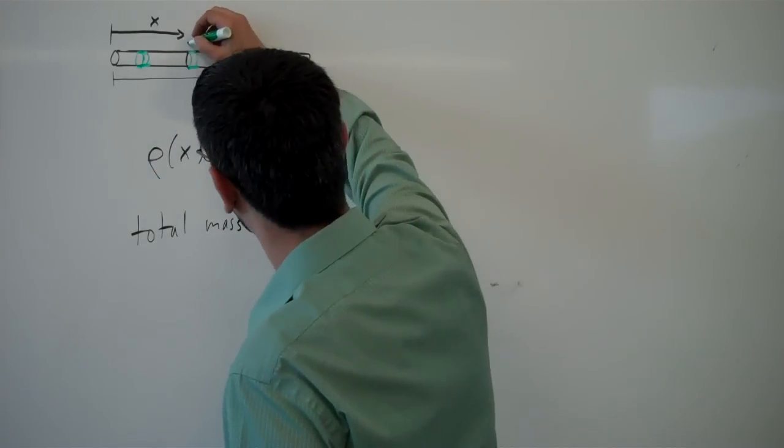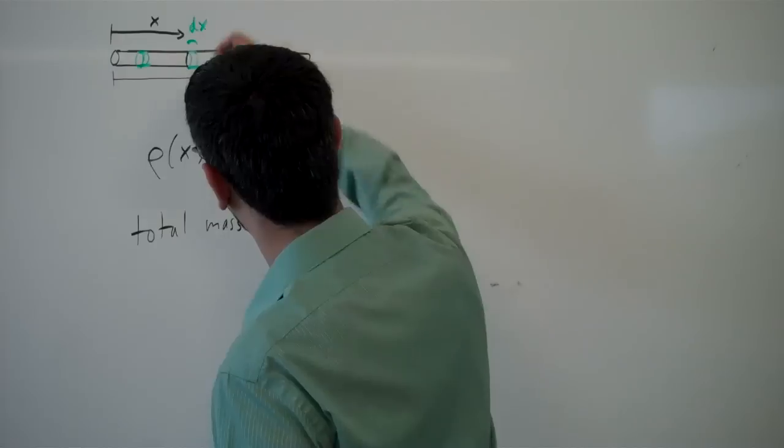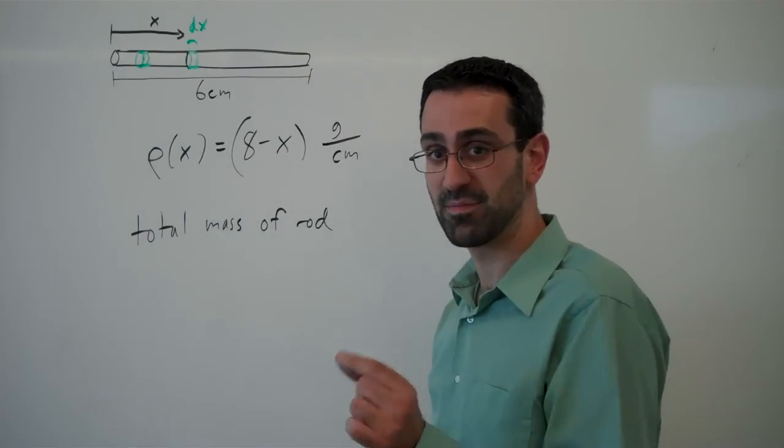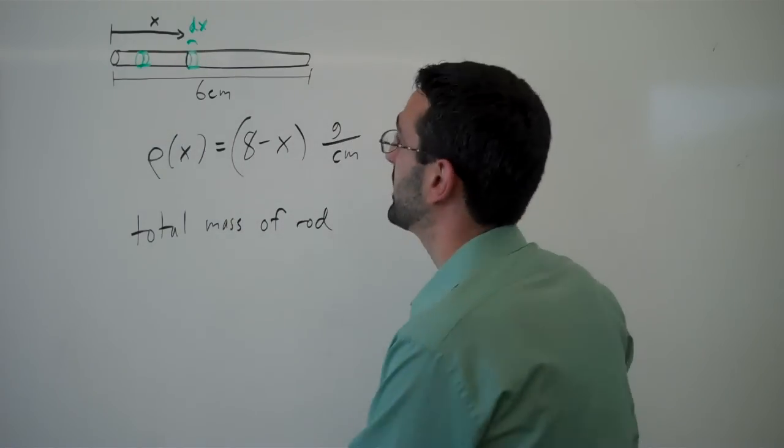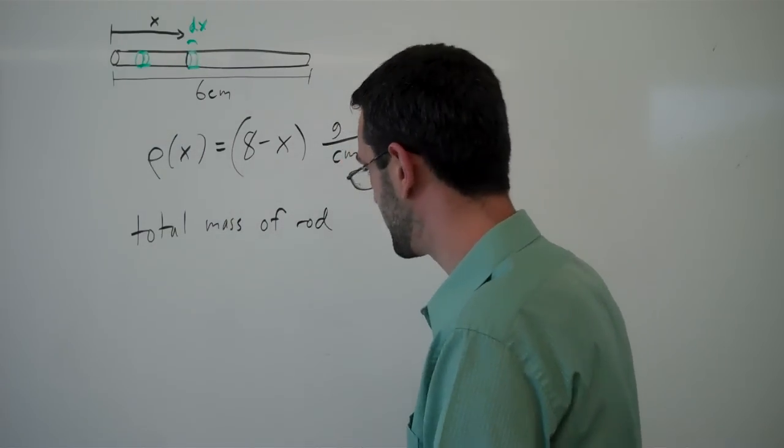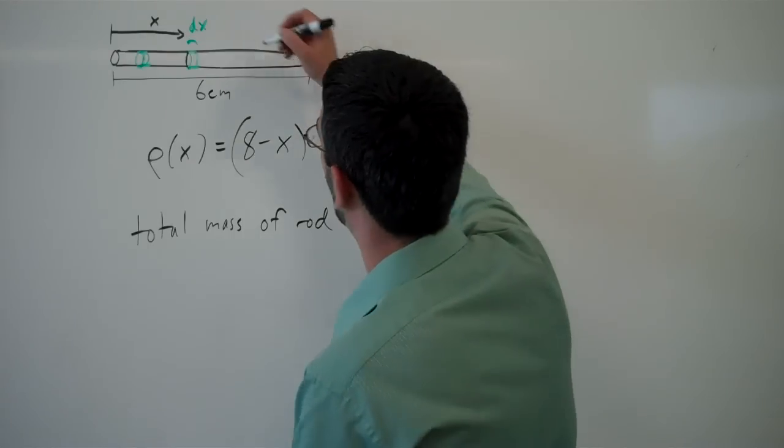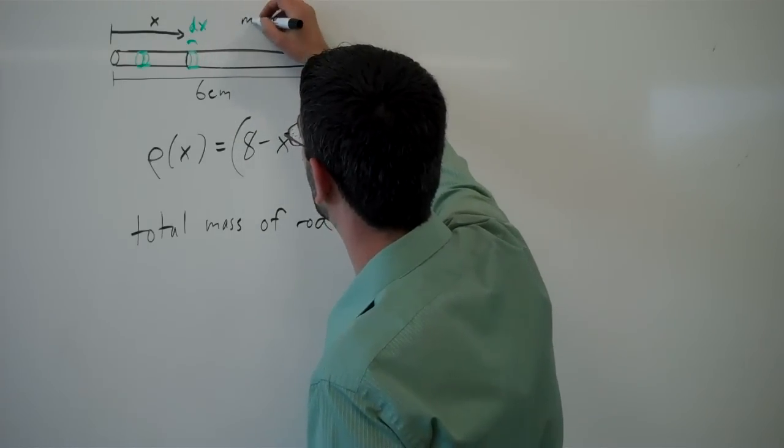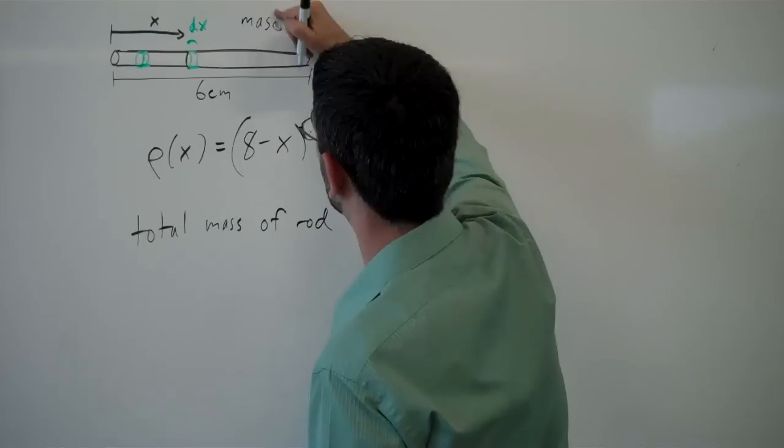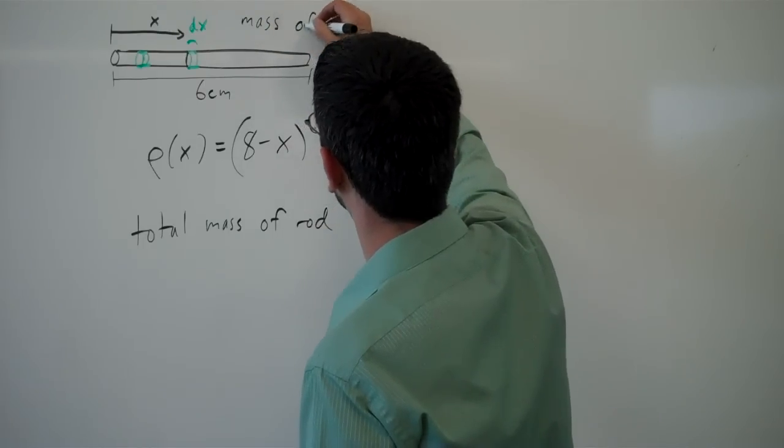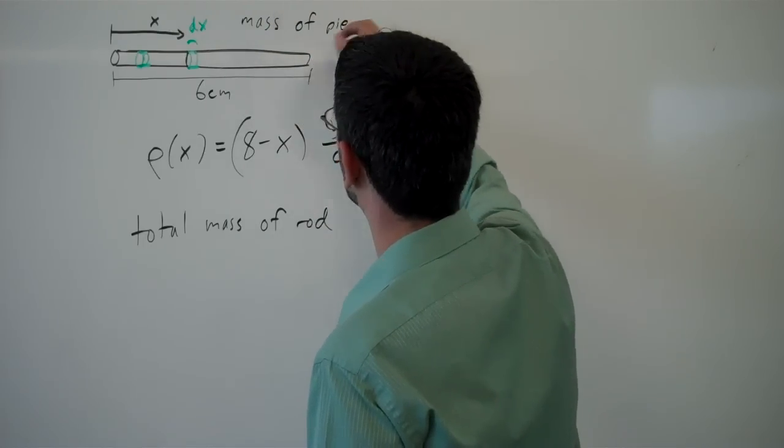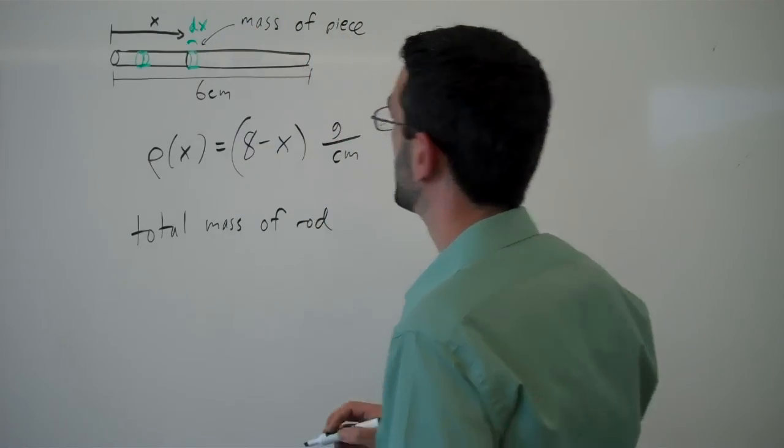Each piece will have length dx. So if a piece of rod has length dx, what is the mass of this tiny little piece?